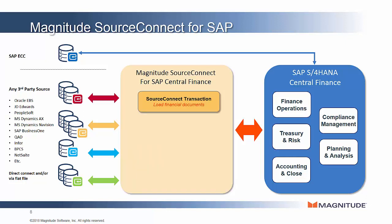The first and most fundamental module is Magnitude SourceConnect Transaction. It loads financial documents or transactions from non-SAP sources, transforms them into the format and standards required by central finance, and then loads them into central finance. This task may be fundamental, but it is certainly not basic and it is not easy. It requires a deep knowledge of each source system, how it stores financial documents, and how to interpret and transform them to meet the strict requirements of central finance.